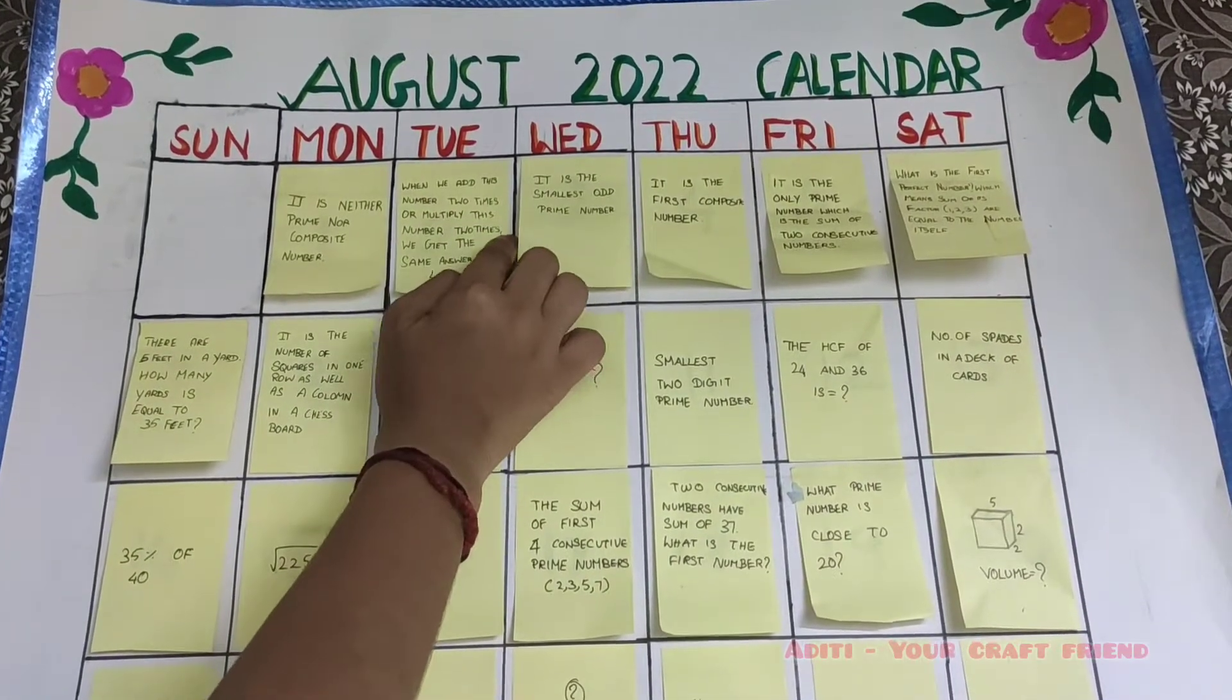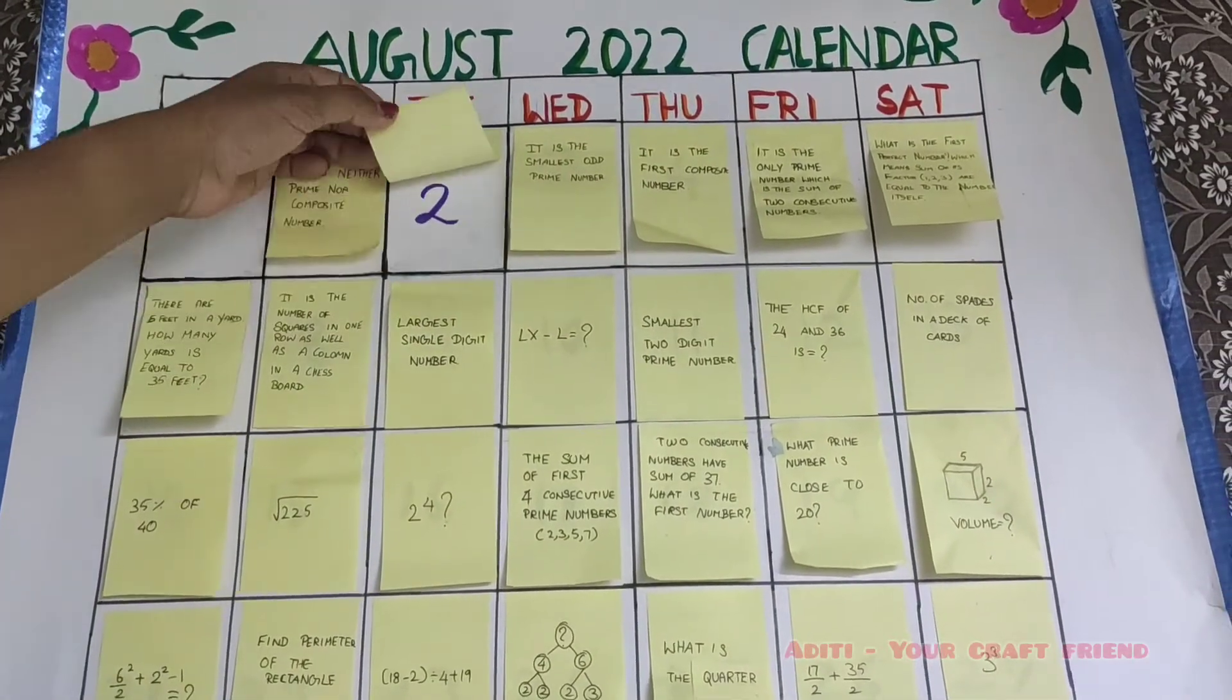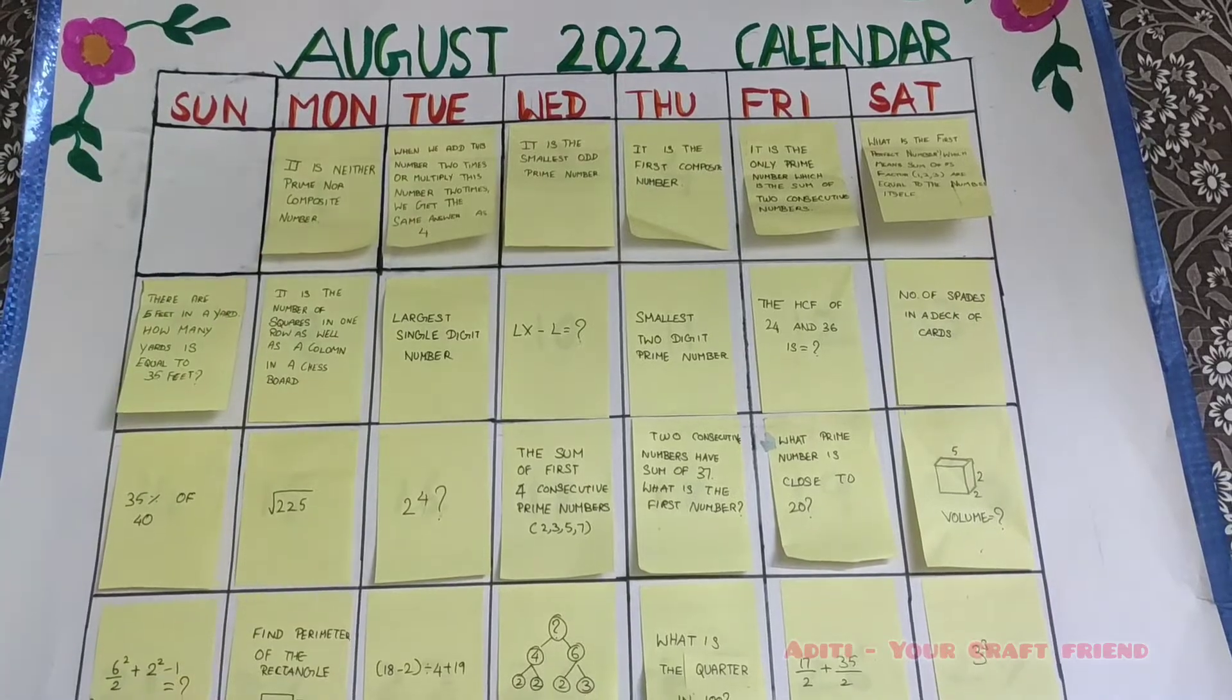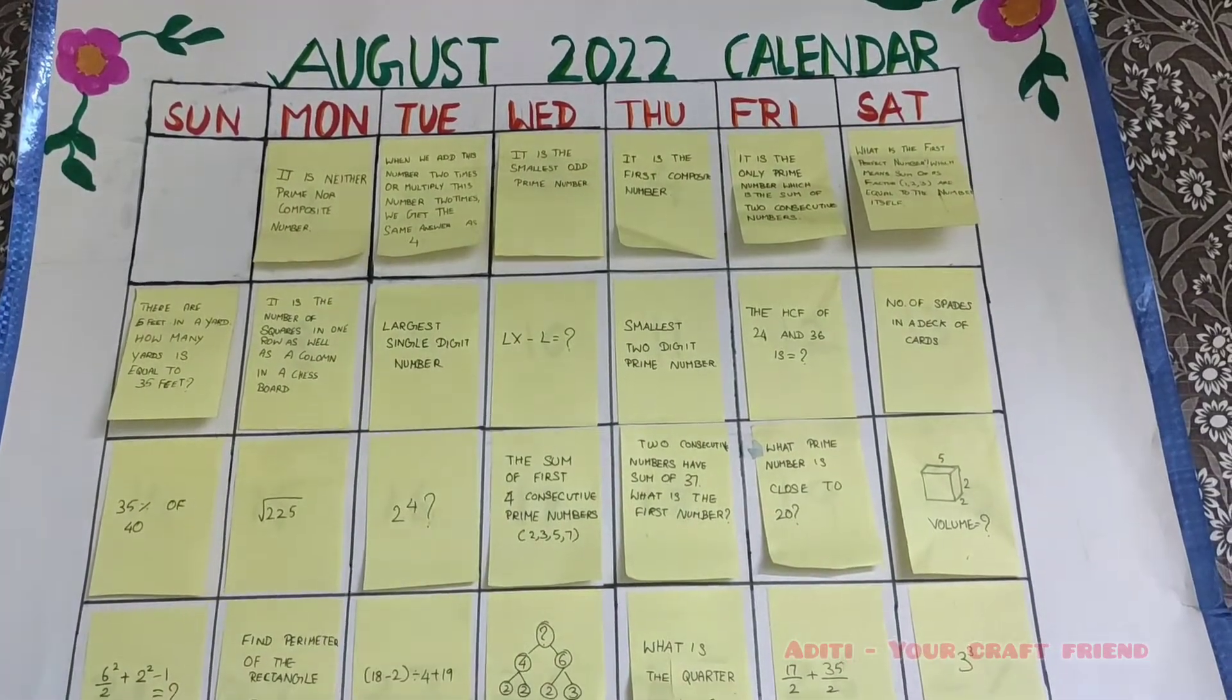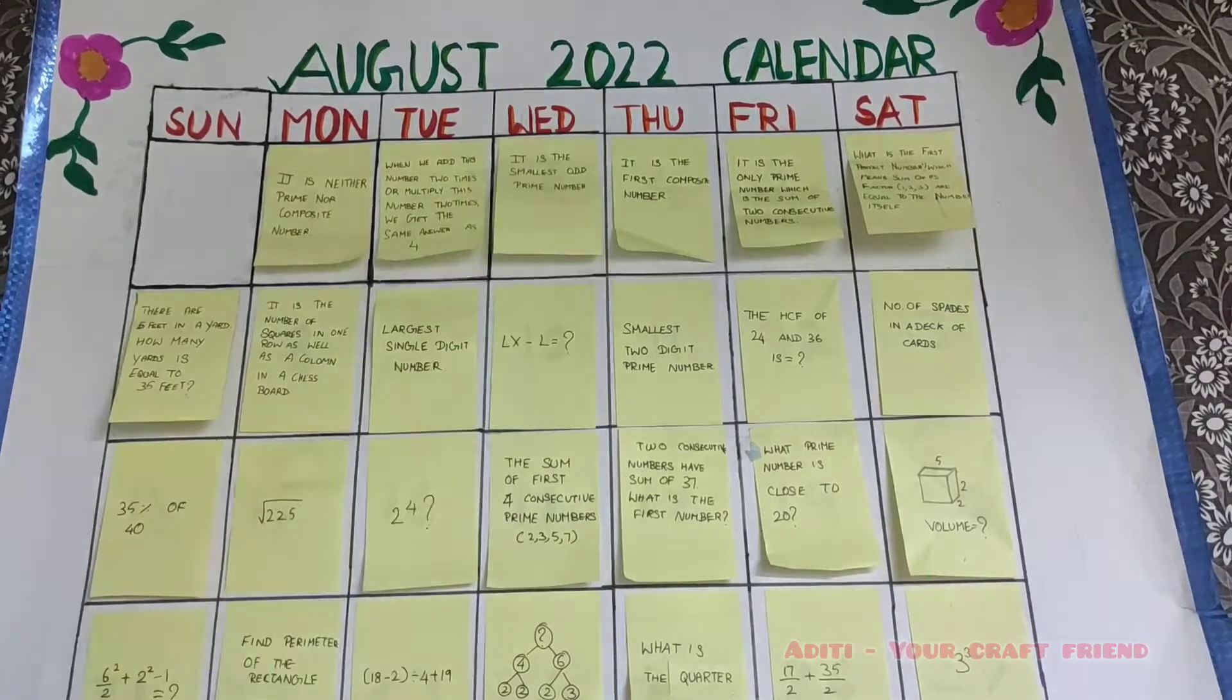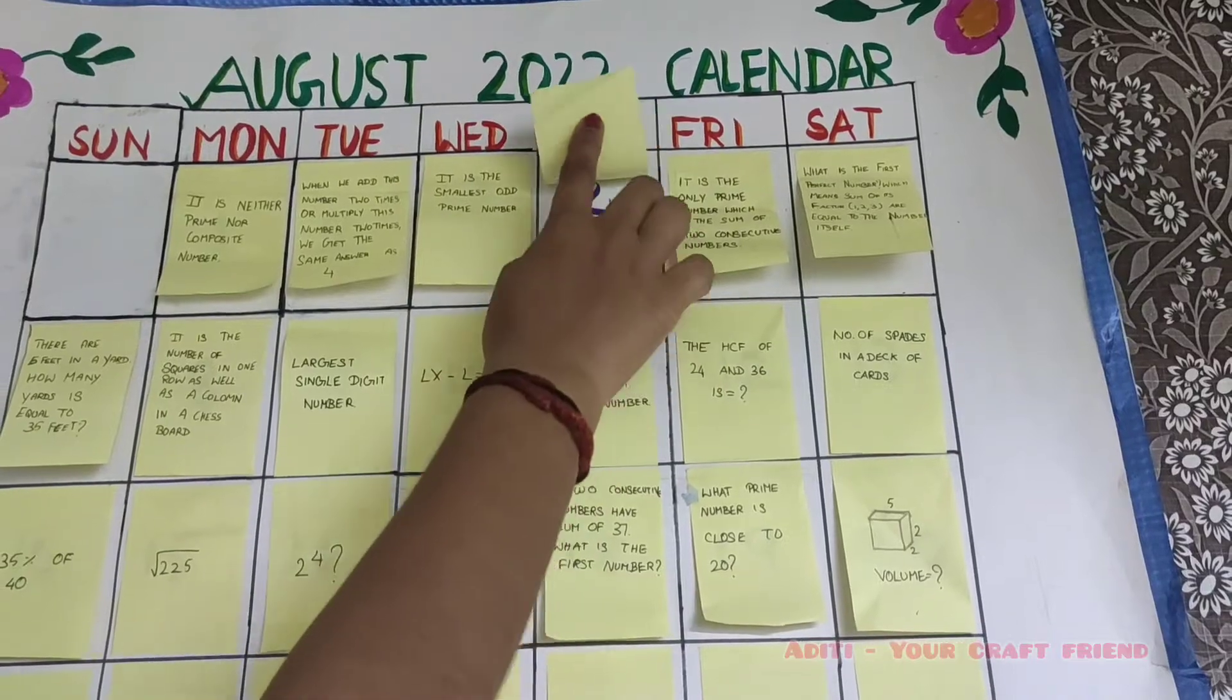It is the smallest odd prime number, so easy. The answer is 3. It is the first composite number. It is 4.